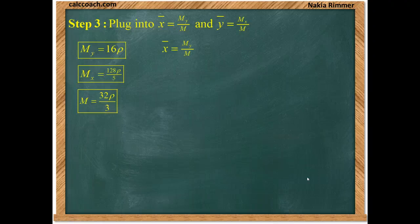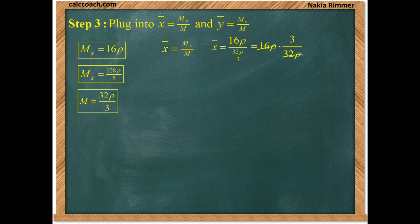To get x bar, we take 16 rho divided by 32 rho over 3. Divided by a fraction is multiplying by the reciprocal. We get cancellation. The 32 rho gets cancelled and turns into a 2.